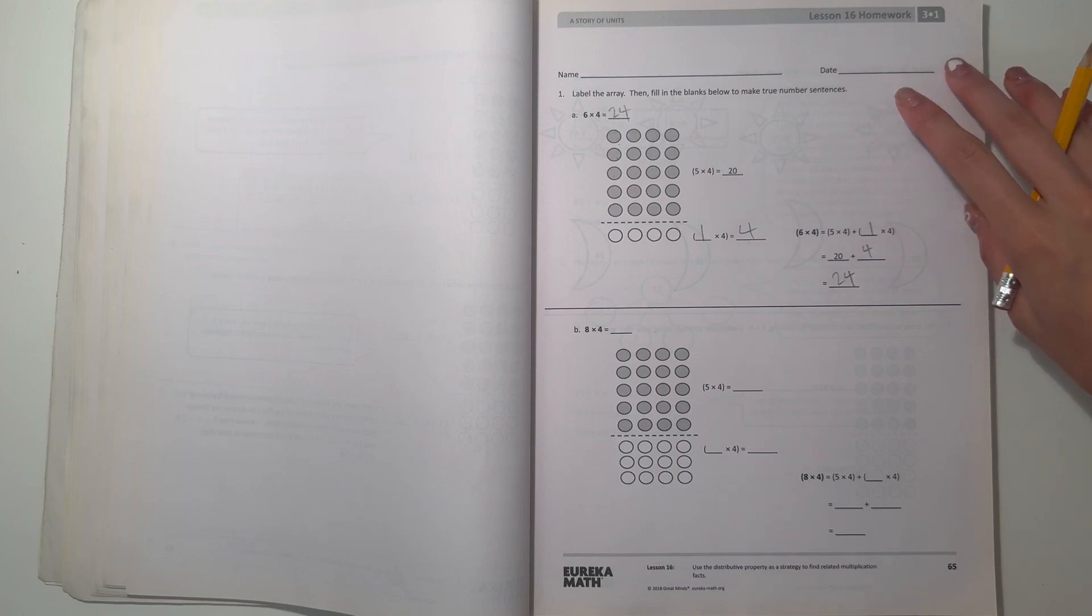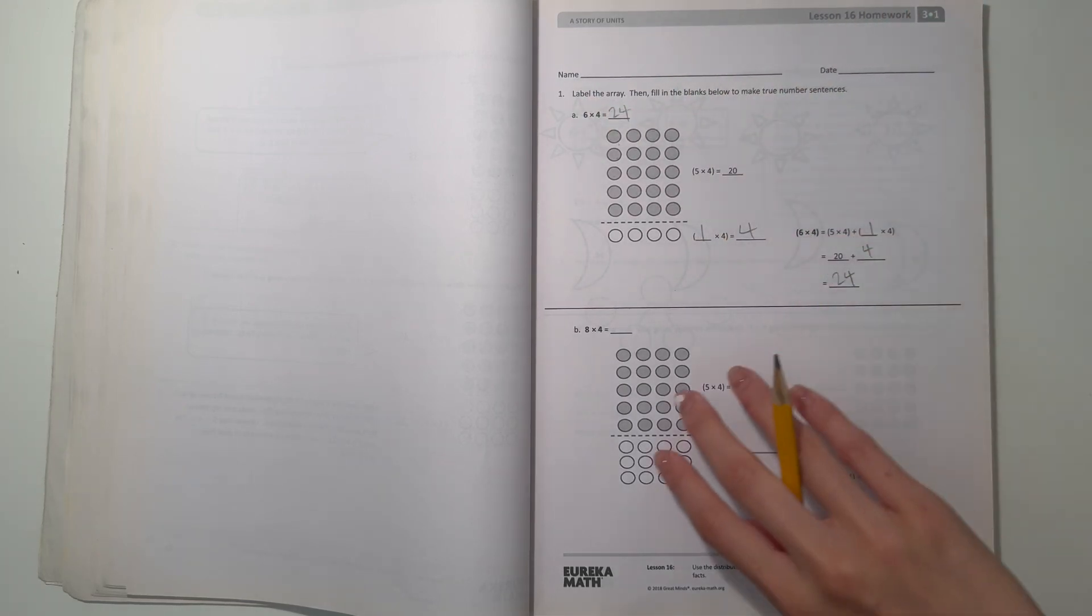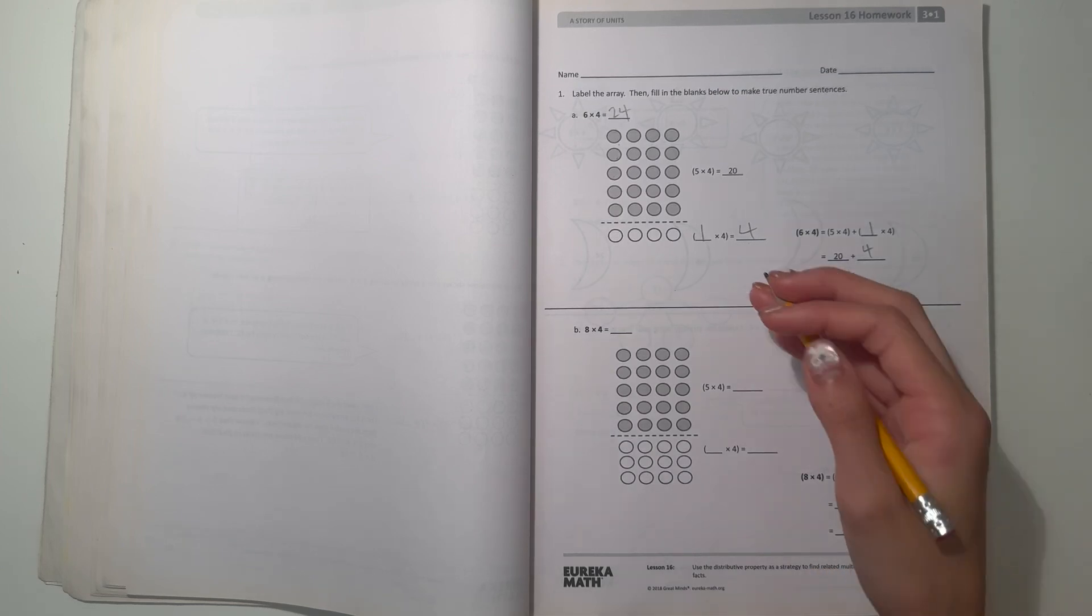What we're doing here is basically breaking apart into different multiplication facts and adding the results of those facts to get the result of six times four.